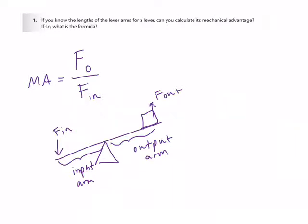So in the original formula, the ratio is the output force divided by the input force. The corollary to that, if you don't know the forces, is to use the lengths of the input and output arms. The length of the input arm divided by the length of the output arm gives us the same ratio and can give us the mechanical advantage of the lever, because work is equal to force times distance.